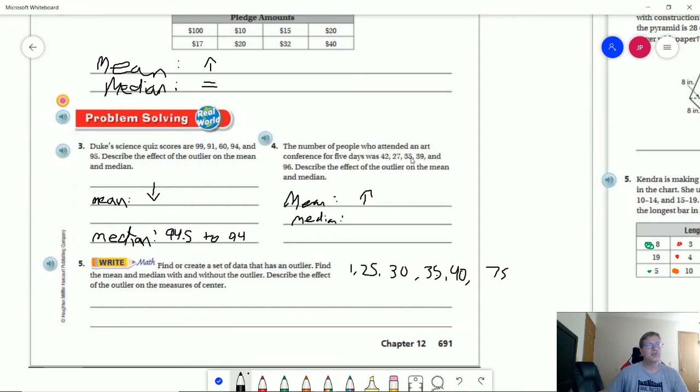Our median is going to be changing as well. So our median originally would have been somewhere in between 35 and 39. So we would go from 37 and now our third and center number would be 39. So again both of those things are going to increase.